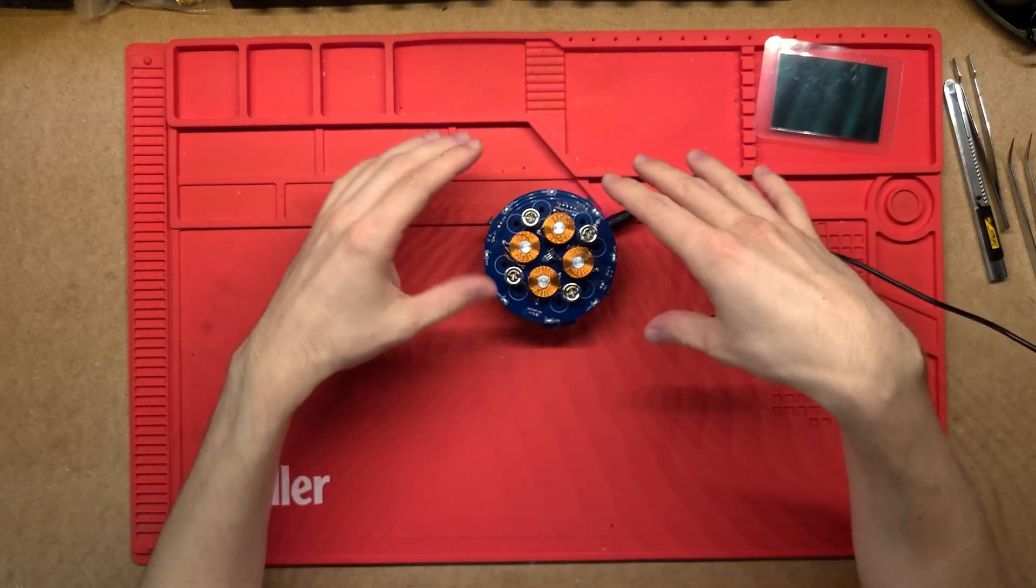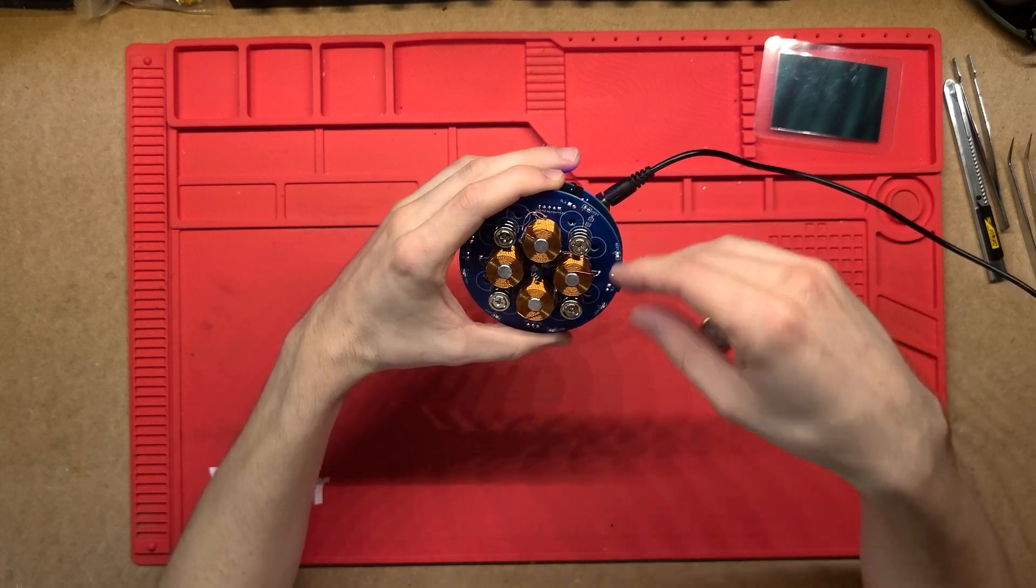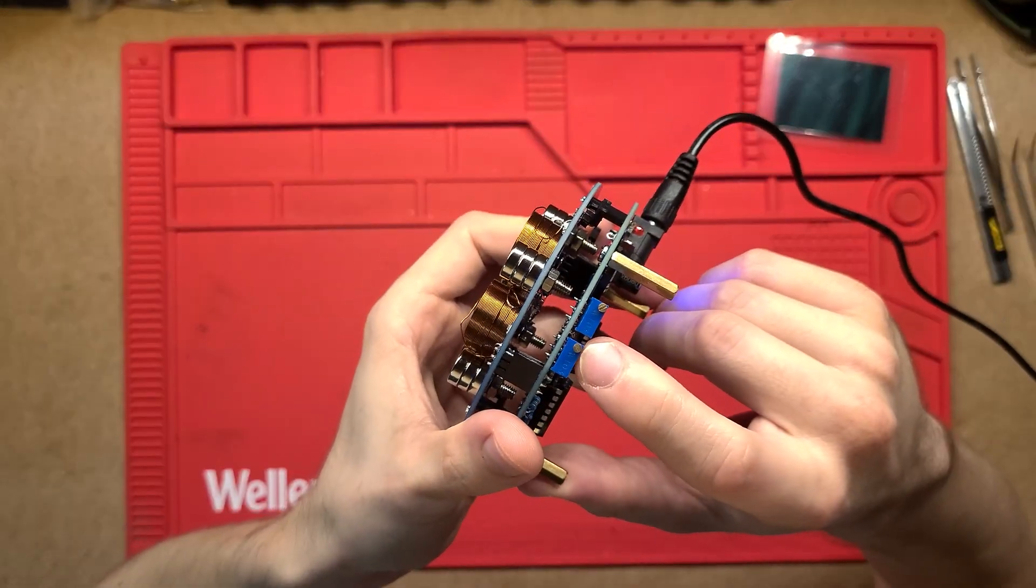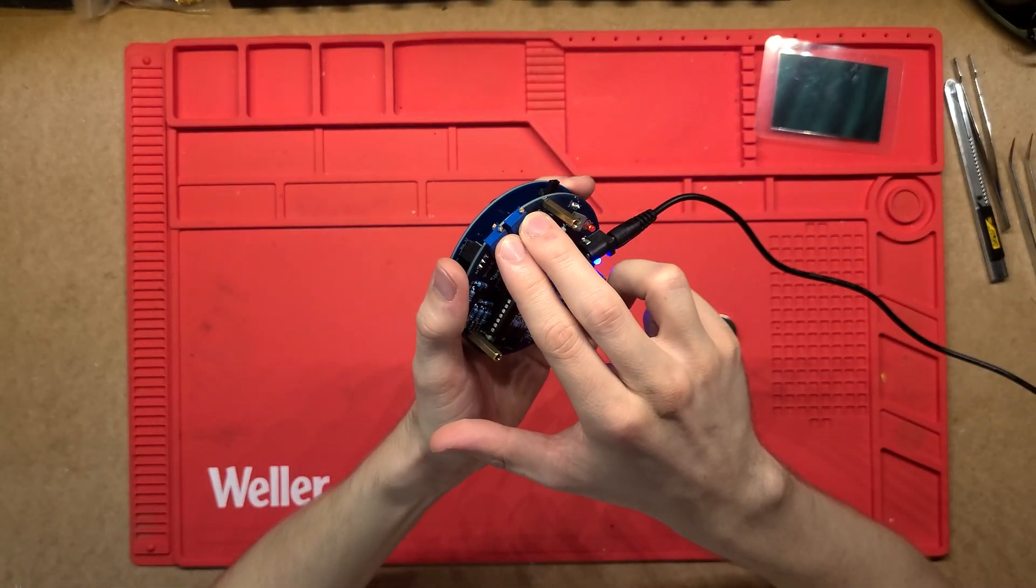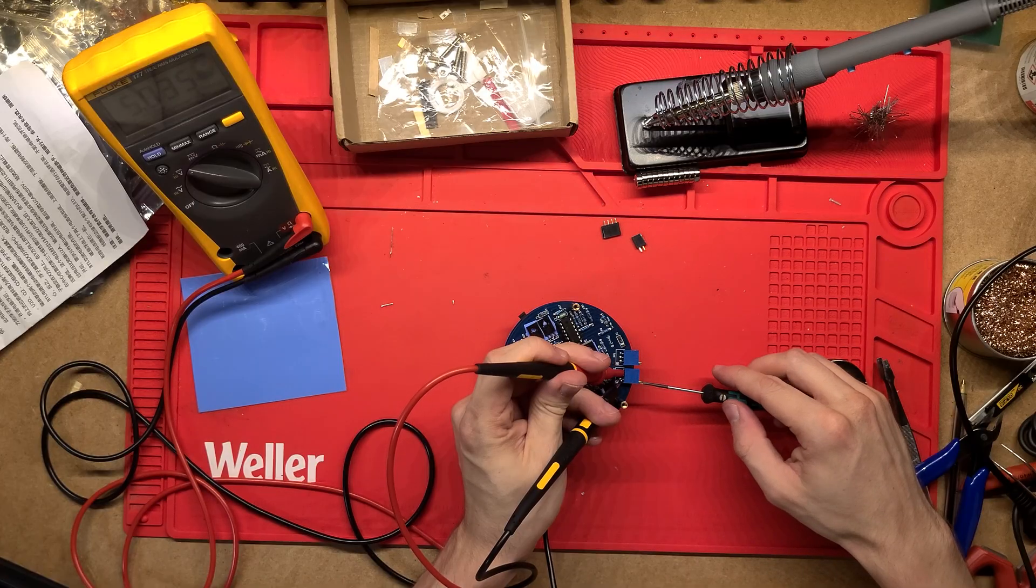The really nice thing about that is there's no code, there's no programming, nothing like that because it's not digital. It's really nice and easy and the way you adjust it is with just these two potentiometers on the side here. You just rotate them - they're variable resistance - to shift that resistance over and then fine-tune the amplification that gets put out to these coils.